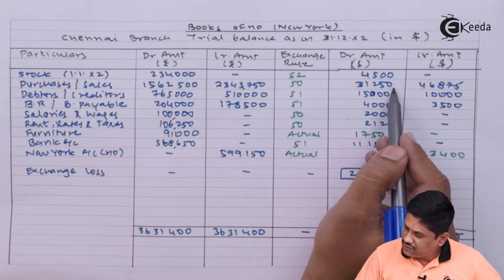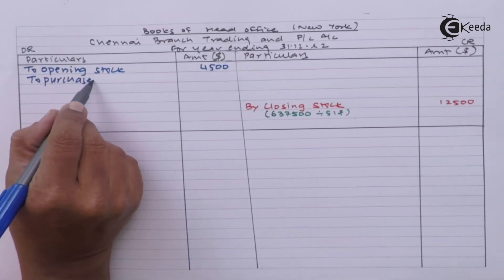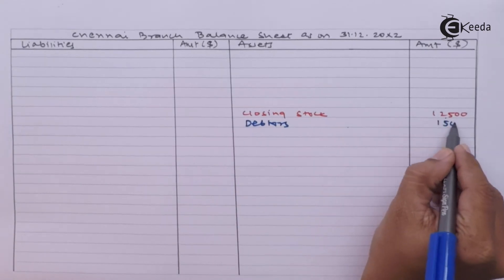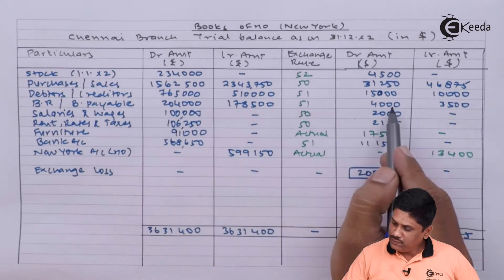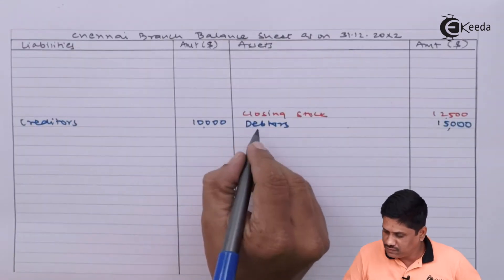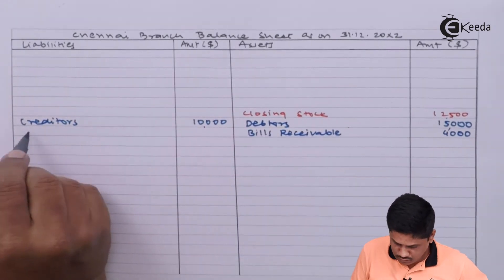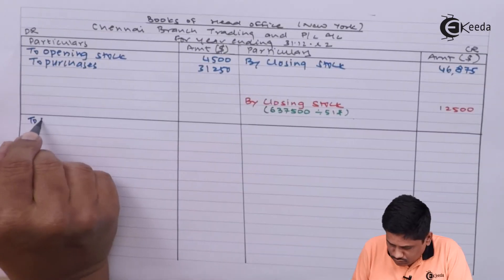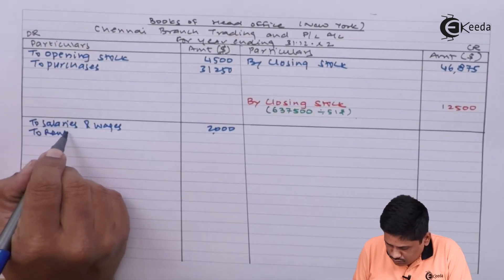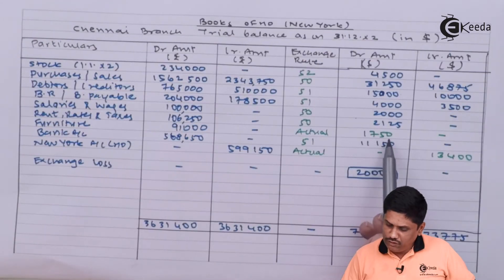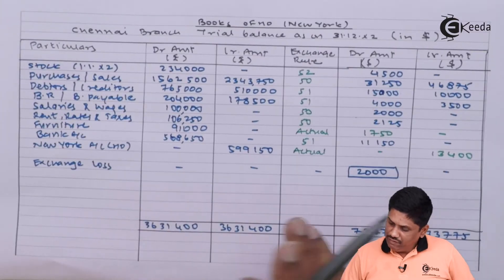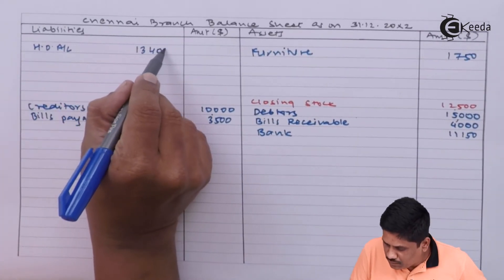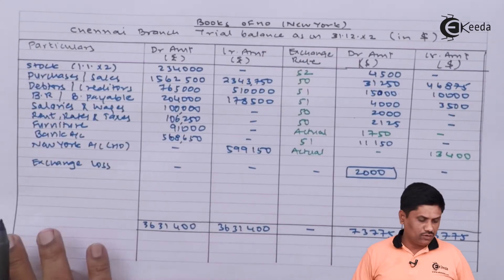Purchases and sales are 31,250 and 46,875 respectively. Bills receivable is 4,000 and bills payable is 3,500. Salaries and wages will come in the P&L account — 2,000. Rent, rates and taxes. Furniture 1,750 will be your asset. Bank account 11,150. New York account, that is head office account, is 13,400. Additionally, exchange loss of 2,000 will be debited to the P&L account.